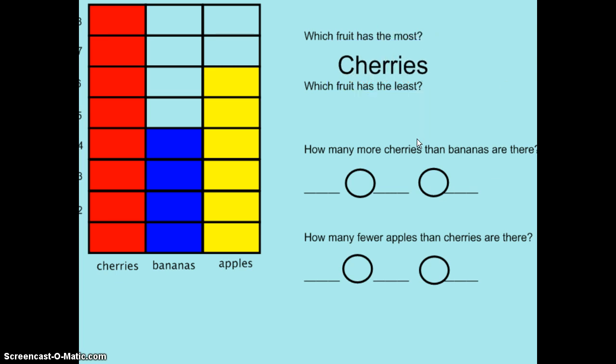Which fruit has the least amount of votes? When I look at my bar graph, I can see that bananas has the least amount of votes. Only four friends picked bananas. On the bar graph, the bar is the lowest for bananas, so I know that bananas has the least number of votes.